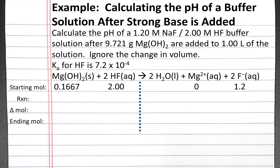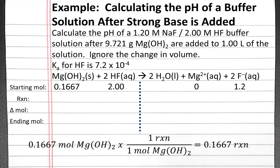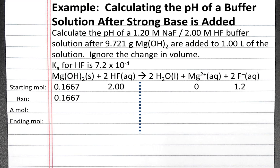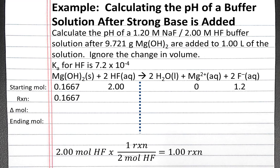Now we determine how many reactions can be performed given each quantity of reactant, taking into account the coefficients in the balanced chemical equation. For magnesium hydroxide, we have 0.1667 moles and each reaction requires 1 mole, so we can carry out 0.1667 reactions. For hydrofluoric acid, we have 2 moles and each reaction requires 2 moles, so we can perform 1 reaction. The limiting reactant is the smallest number in this row, so our limiting reactant is magnesium hydroxide, and we'll use 0.1667 for the change in moles.